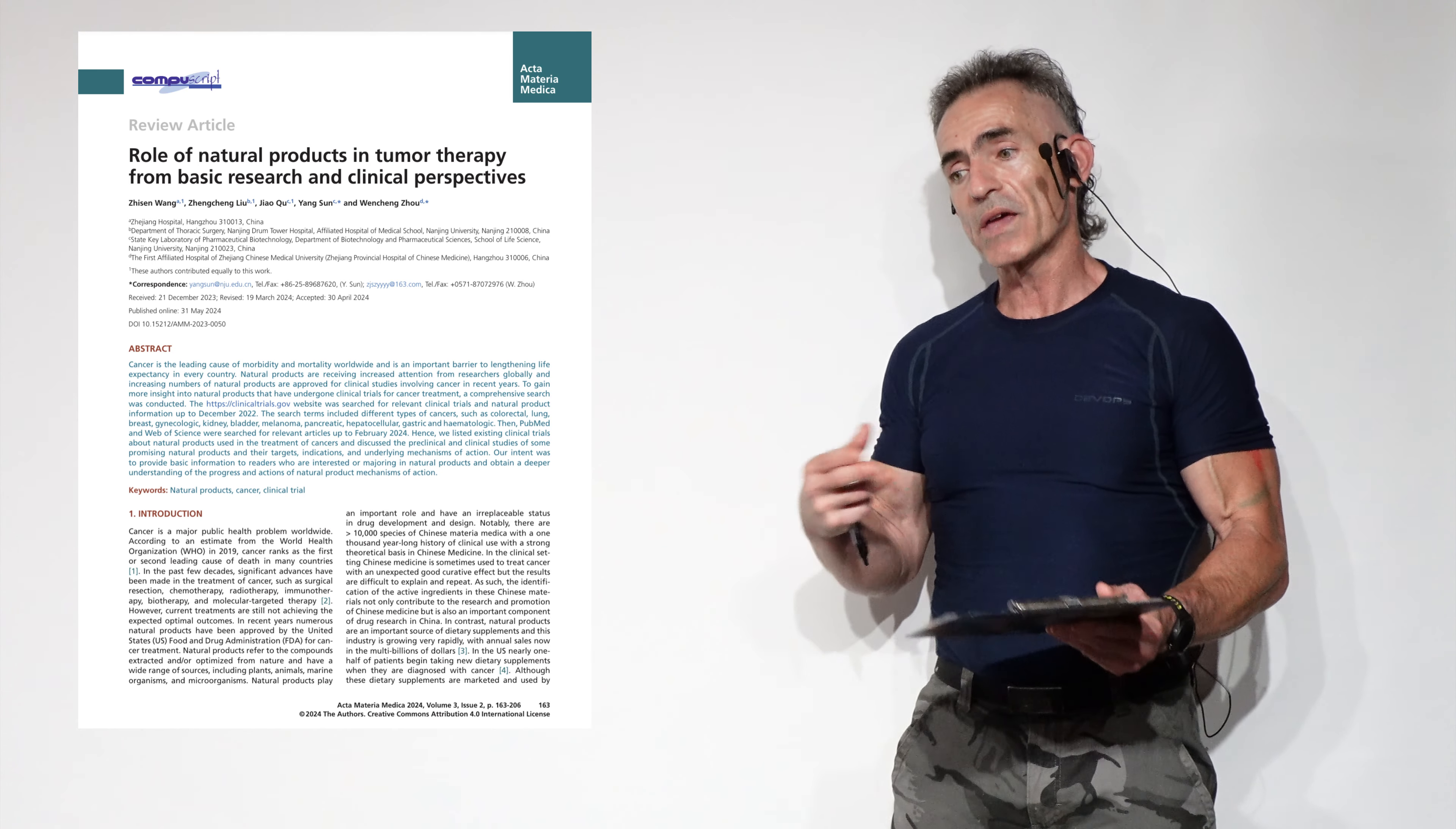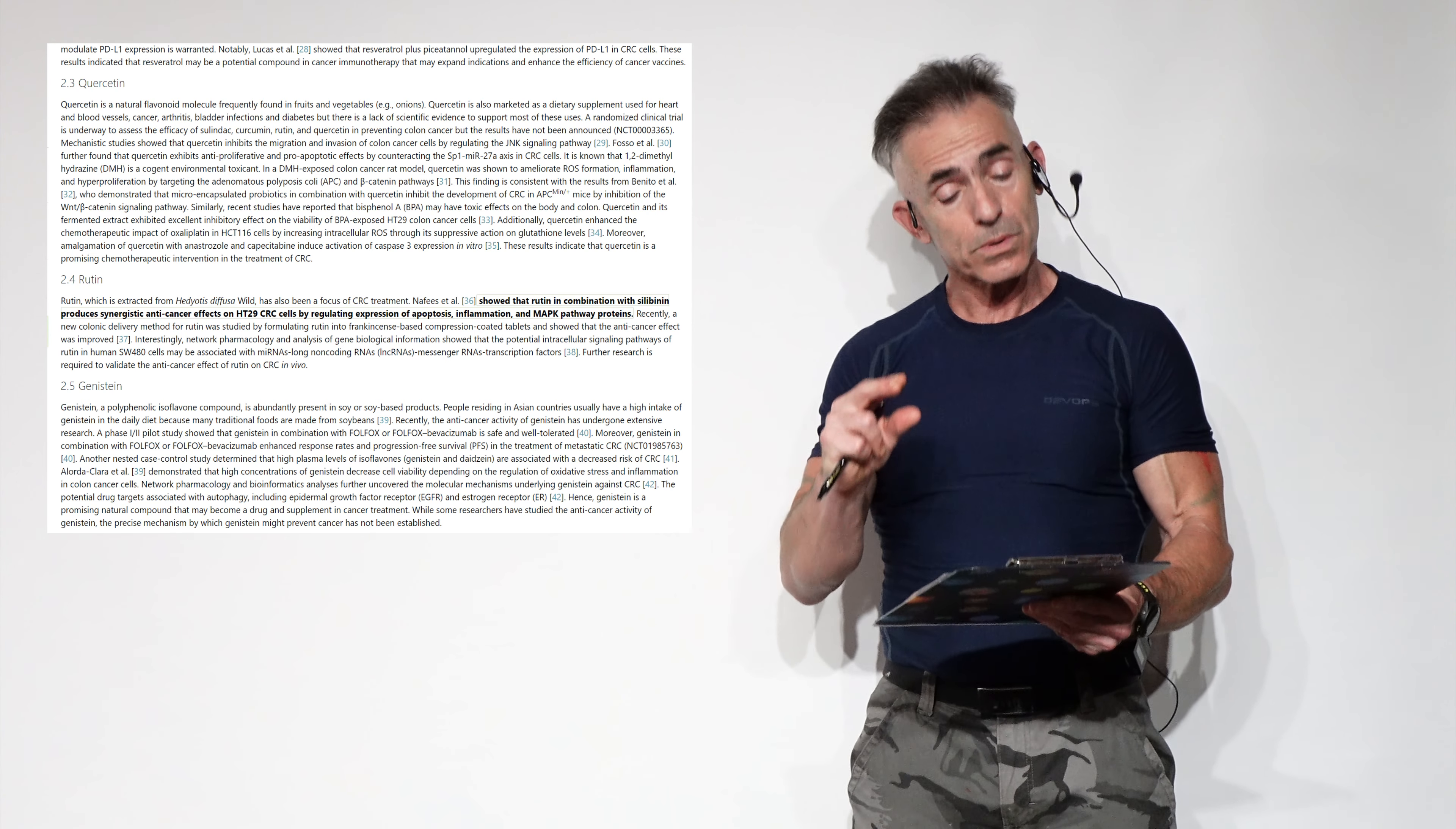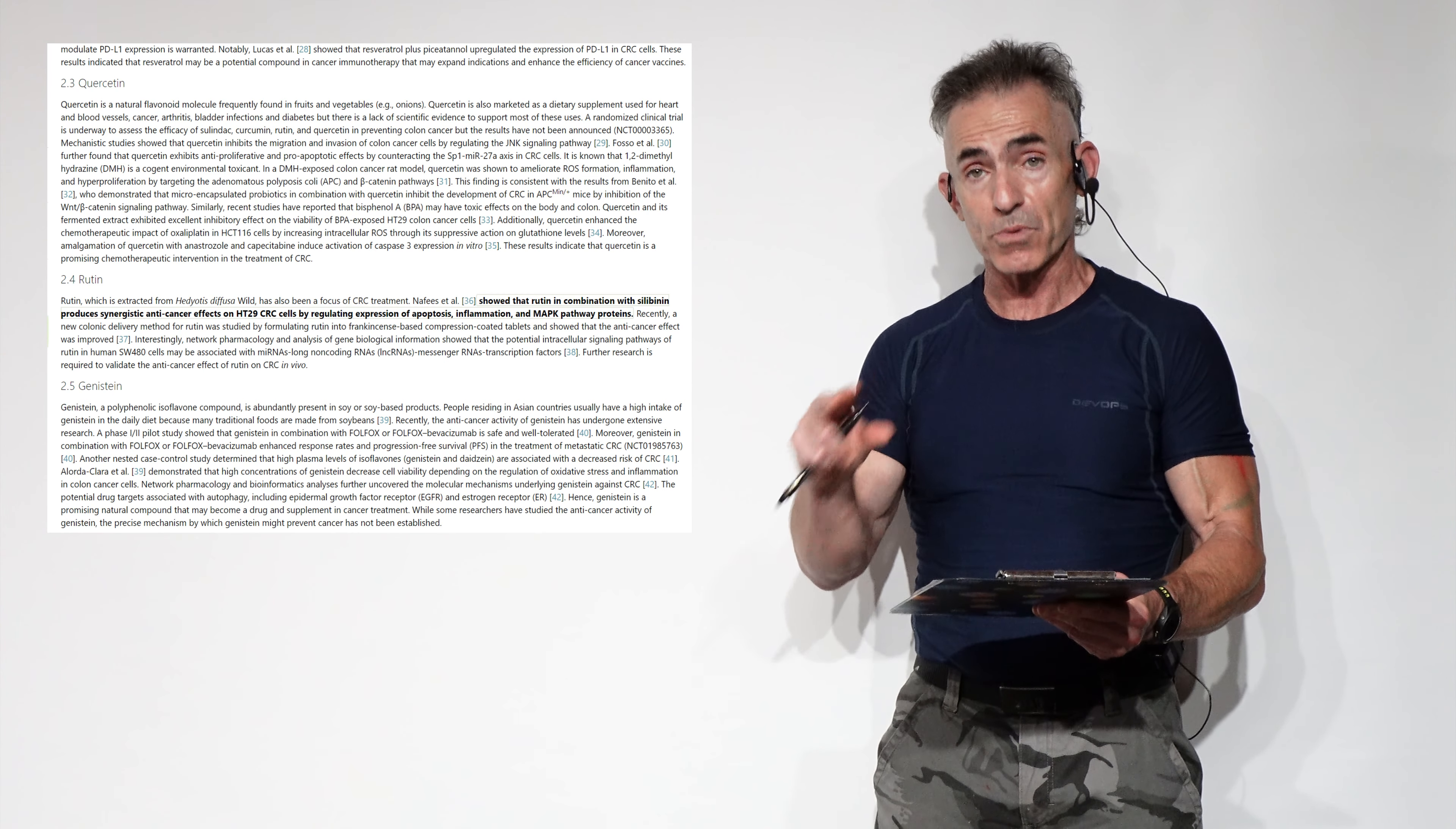And therefore, it gives you a small taste or a few breadcrumbs in what this actually means. To perceive colorectal cancer, they showed that rutin, who would have guessed, rutin in combination with silibinin produce a synergistic anti-cancer effect on HT29 colorectal cancer cells by regulating expressions of apoptosis, inflammation, and MAPK pathway proteins.